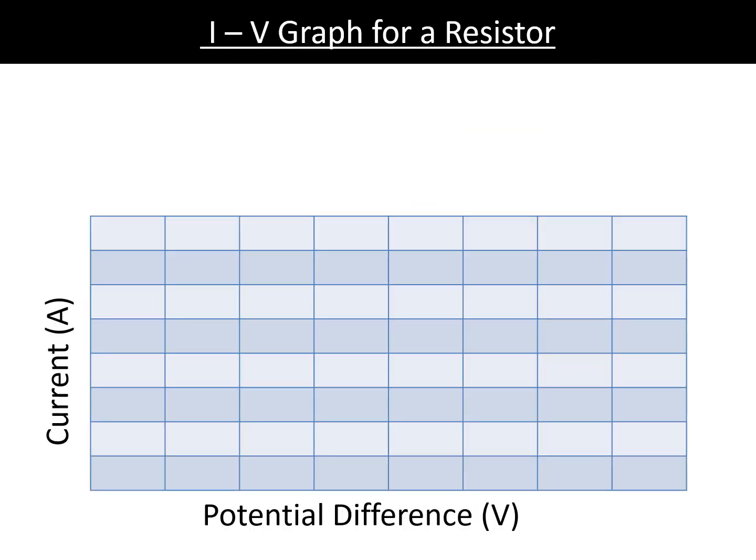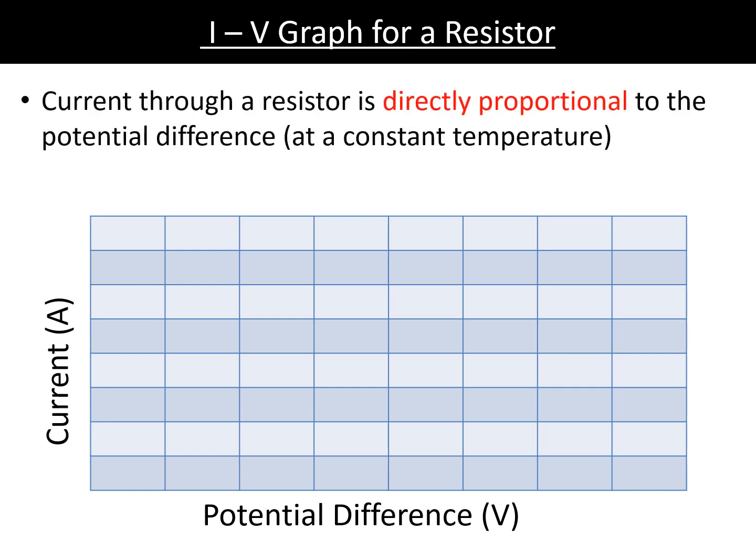So first of all, the I-V graph for a resistor. We've got on the y-axis current and on the x-axis potential difference or voltage. For a resistor, this is a directly proportional relationship which is very common in the sciences, especially physics. It's directly proportional because it is a straight line that goes through the origin - whether it's positive or negative it will be a straight line. So this is in relation to Ohm's law, so the equation is V equals IR.